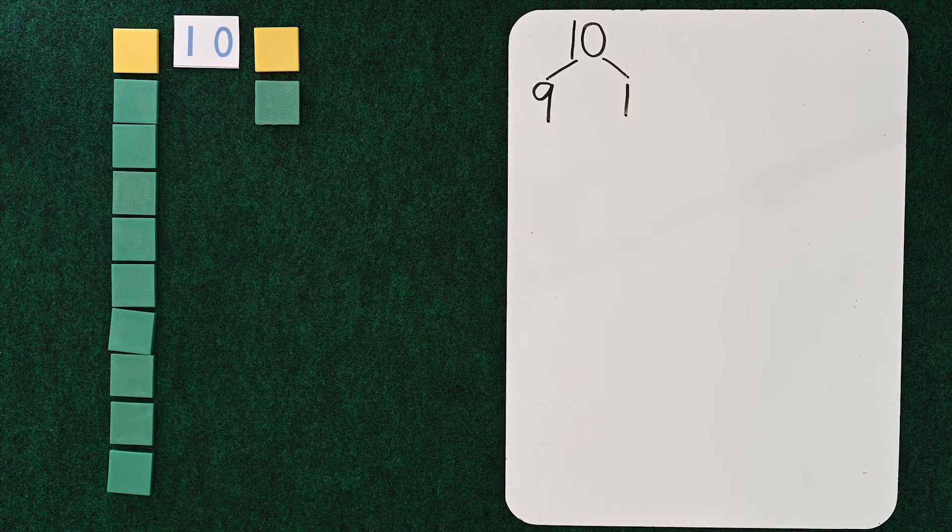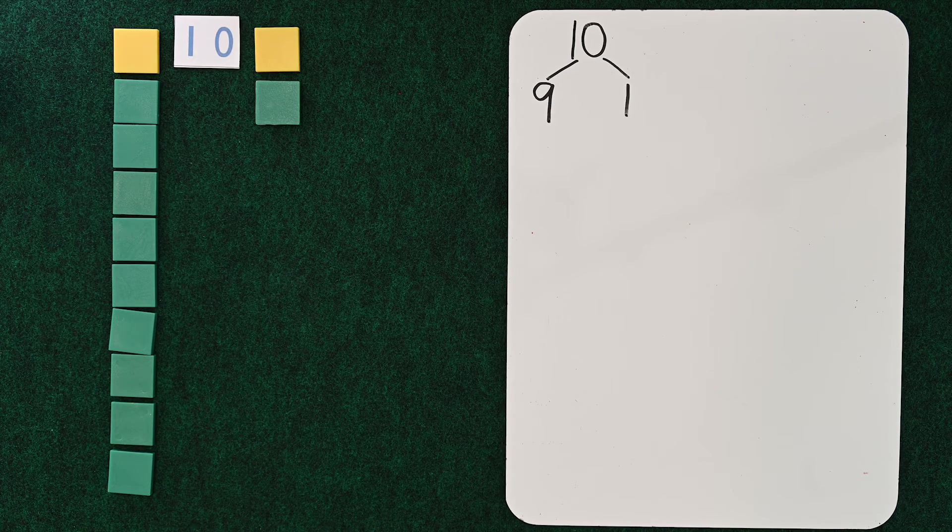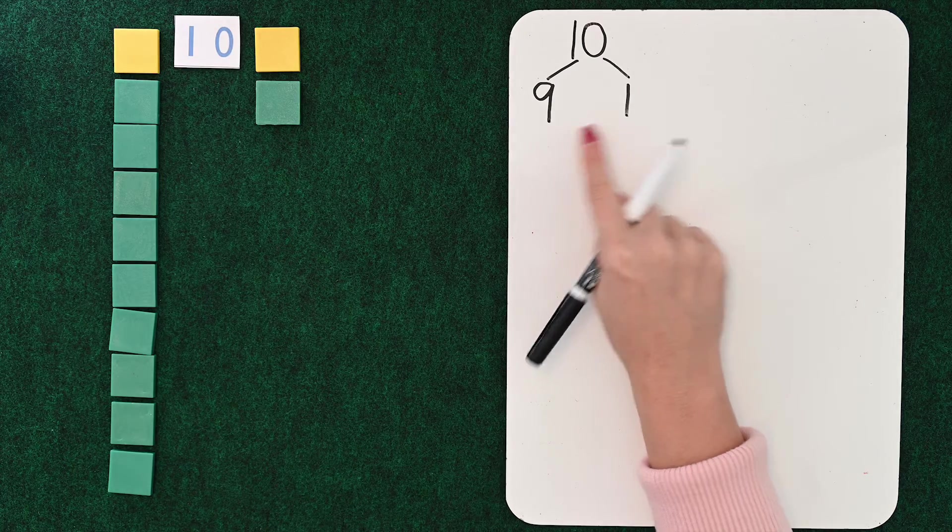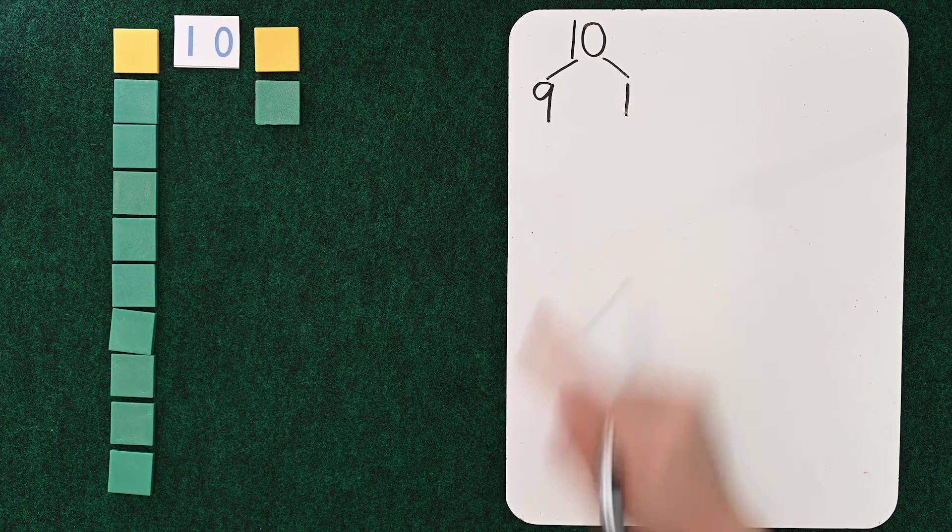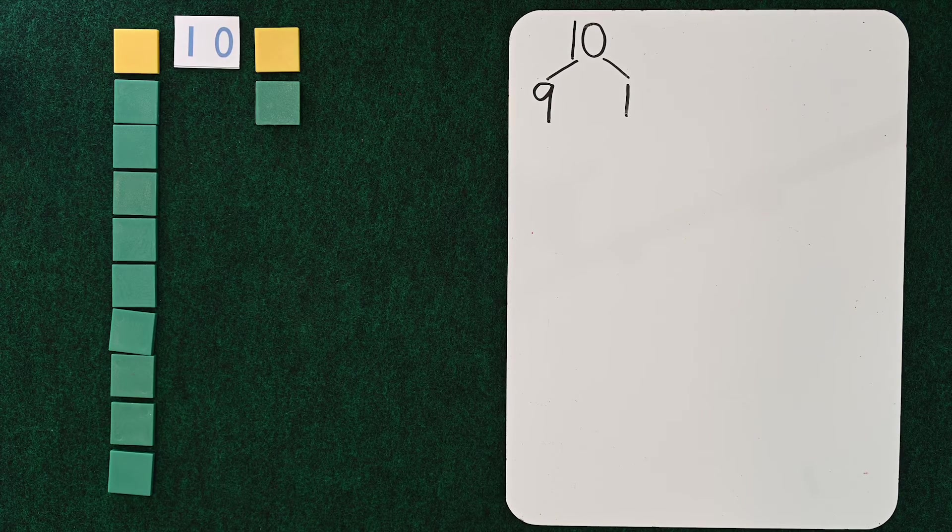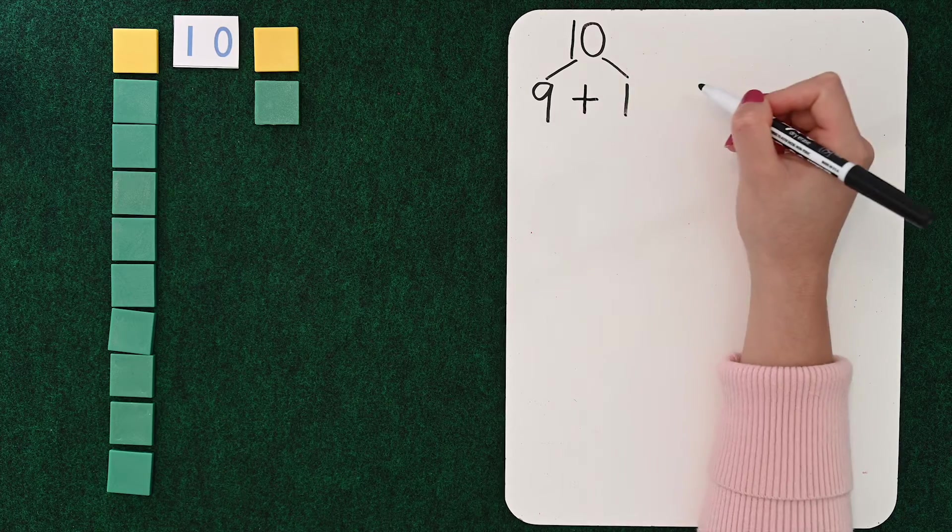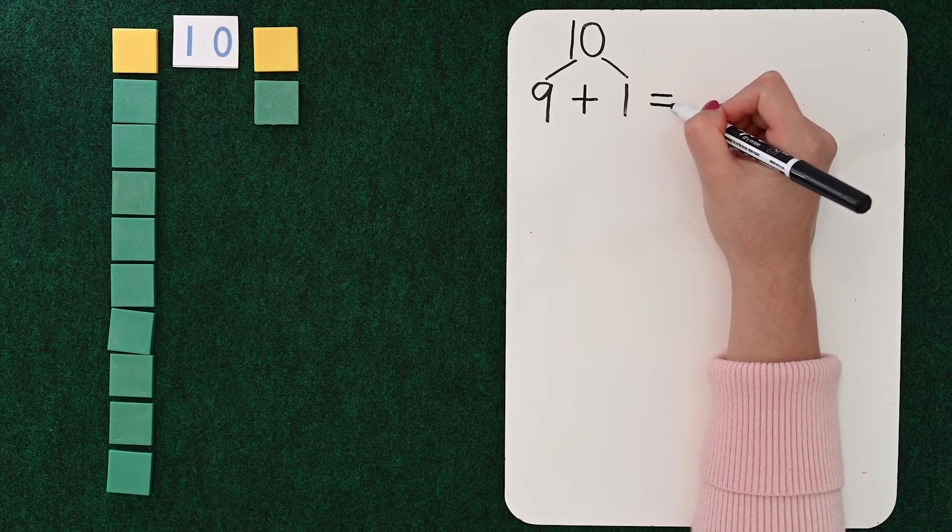There's the number 10. You can divide the 10 as 9 and 1. So how many cookies all together? 10. Kid one has 9, kid two has 1.